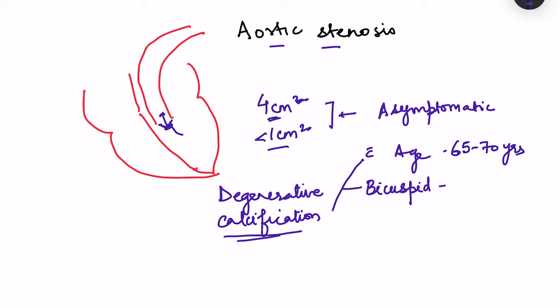Other causes include rheumatic heart disease and also fibrosis occurring due to radiation therapy. All these causes ultimately lead to degenerative calcification changes in the aortic valve, which results in narrowing of the aperture of the aortic valve.